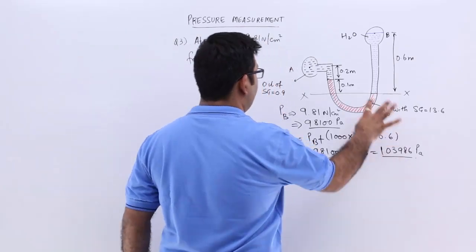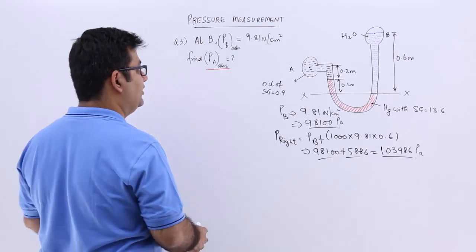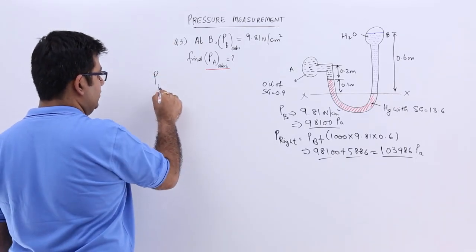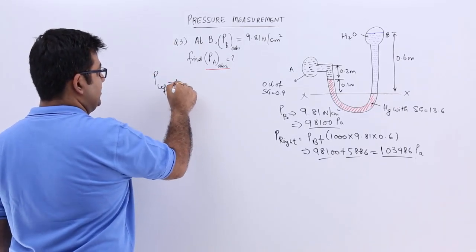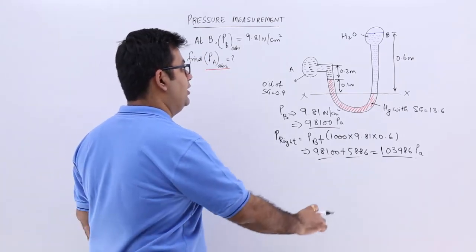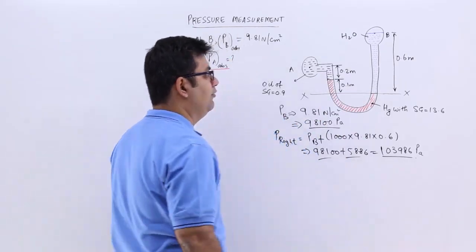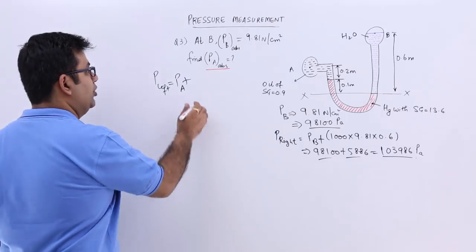So this is the pressure in the right limb. This pressure has to be equal to the pressure in the left limb. So let's find that out. So pressure in the left limb is equal to PA plus the pressure due to this much height of oil. So if you have 0.2,